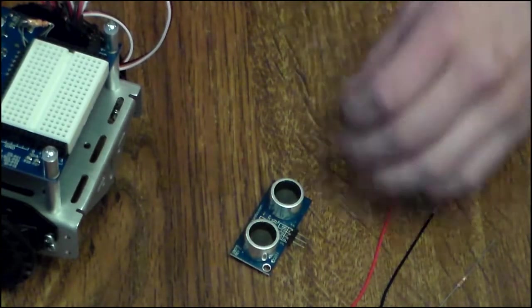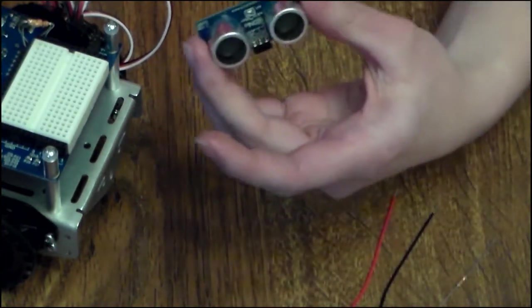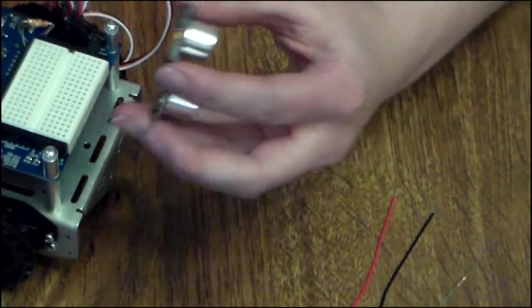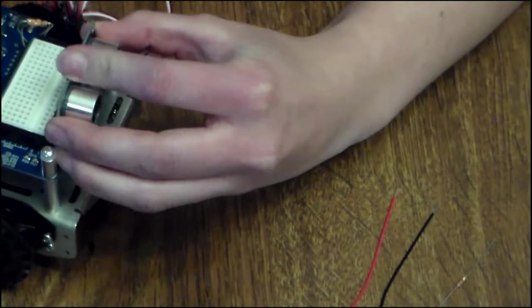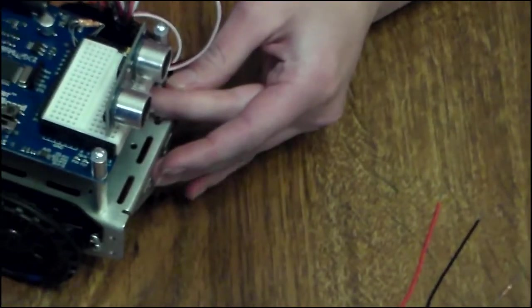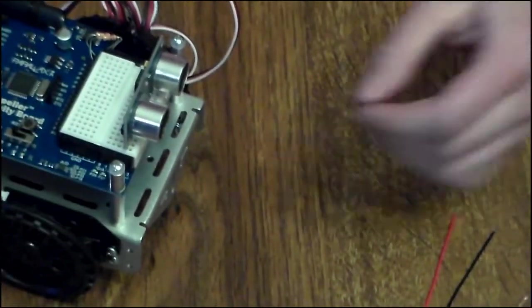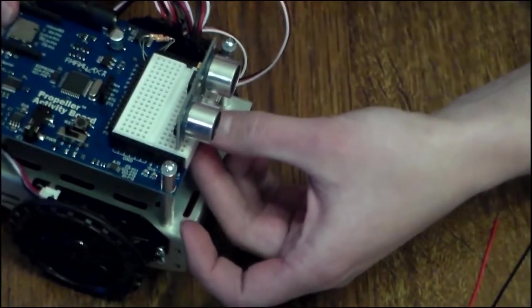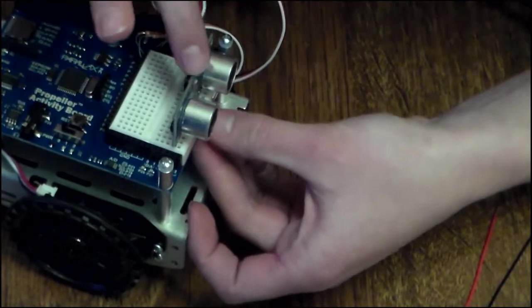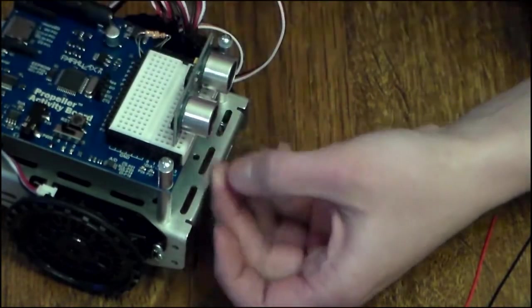So the first thing you'll want to do is put the ping sensor onto the breadboard. You'll just center it on top and press it down. And then if you look at the front of the sensor, it is labeled, so it tells you which one goes to the ground and which one goes to the 5 volt and which one to hook the resistor to.